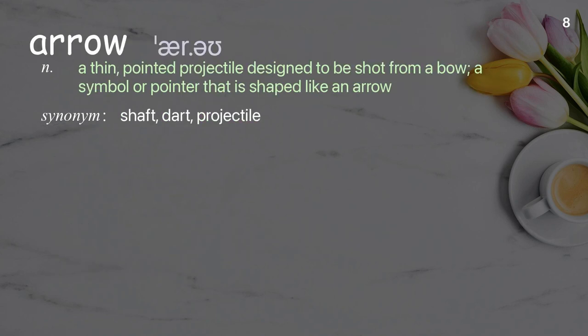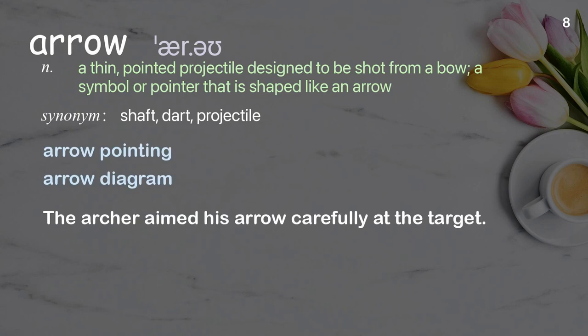Arrow: a thin, pointed projectile designed to be shot from a bow; a symbol or pointer that is shaped like an arrow. Examples: arrow pointing, arrow diagram. The archer aimed his arrow carefully at the target.